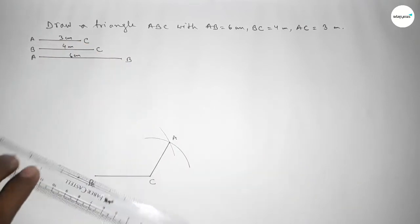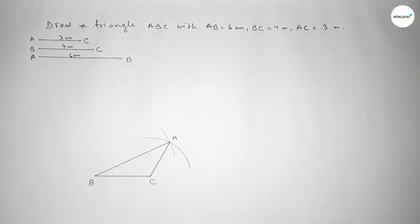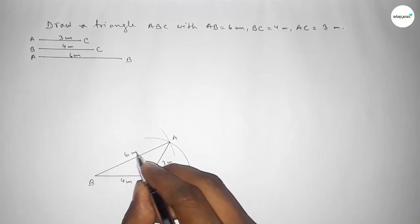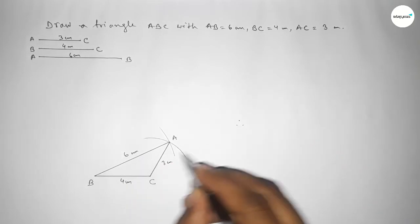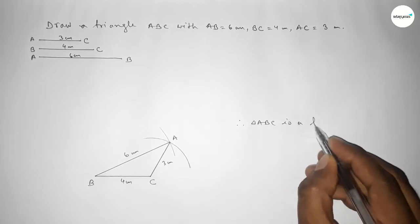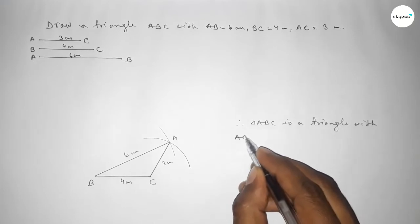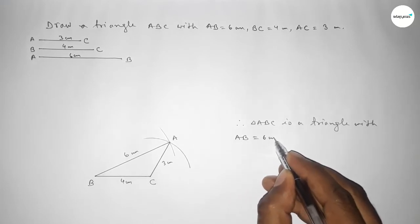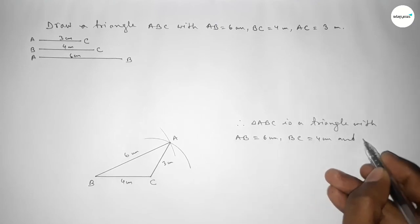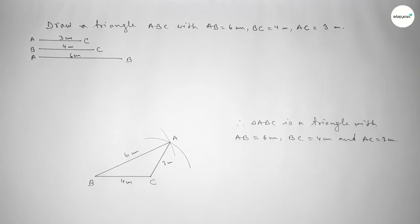Now joining A and C, then joining A and B to get triangle ABC. This side is 4 centimeter, this side is 3 centimeter, and this side is 6 centimeter. Therefore, triangle ABC is constructed with AB equal to 6 centimeter, BC equal to 4 centimeter, and AC equal to 3 centimeter.